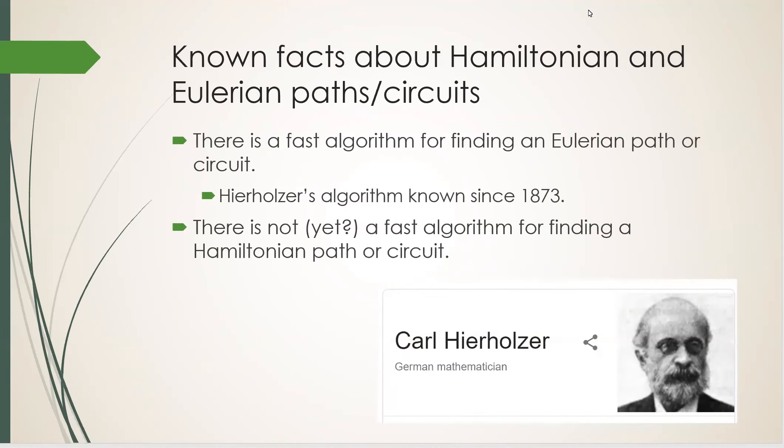Now, here's an important known factor about Hamiltonian and Eulerian paths and circuits. There is a fast algorithm to find an Eulerian path or circuit. It's called Hierholzer's algorithm and it has been known since 1873, named after the German mathematician Karl Hierholzer. Whereas for a Hamiltonian path or circuit, there is not a known fast algorithm for finding one. That means that in real life, whenever possible, you want to model your application as an Eulerian problem and not a Hamiltonian problem.